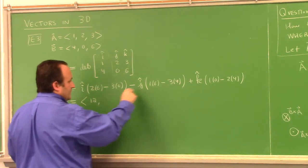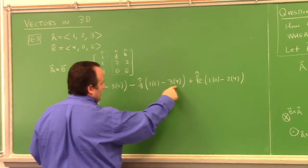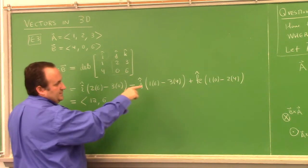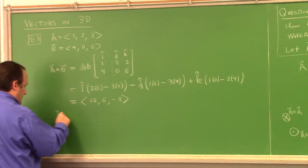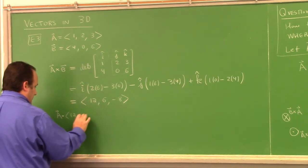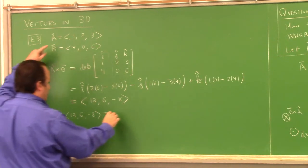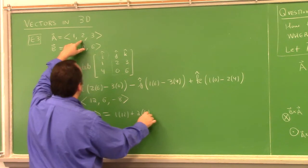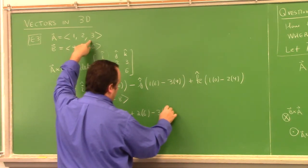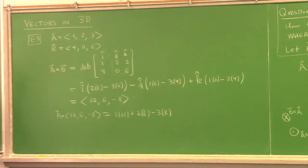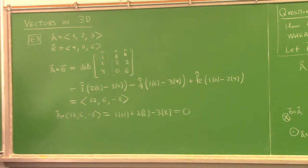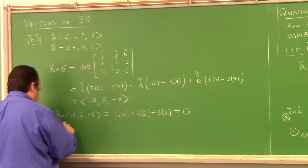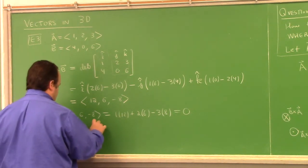About 60% of the time students do this calculation they get it wrong on tests, so always check your answer. The determinant mnemonic helps keep track of components, but it's not foolproof. Checking via dot product is easy and doesn't cost much — dot products are quick. So always check both dot products after computing a cross product.